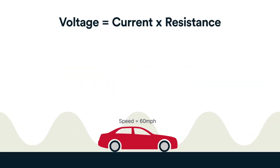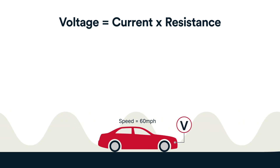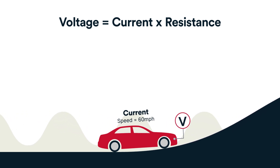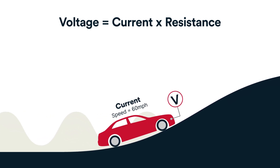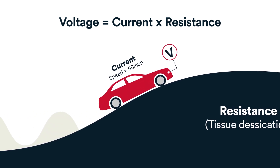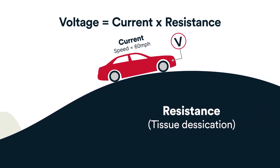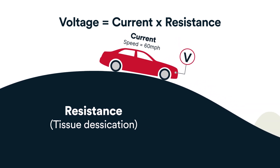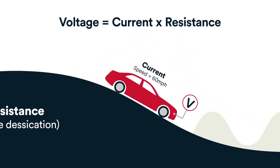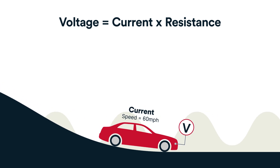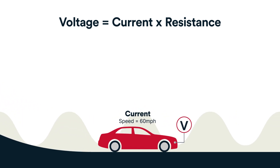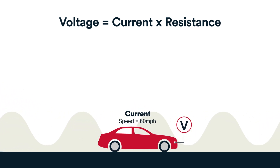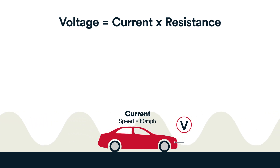To help understand this relationship, think of a car traveling at 60 miles per hour on cruise control. In this metaphor, the engine represents voltage and the desired speed of 60 miles per hour represents current. Upon encountering resistance — shown here as a hill — the engine must increase its driving force, increasing the voltage to overcome gravity to maintain the 60 miles per hour speed. Upon reaching the summit, the engine must reduce its driving force to preserve the speed, decreasing the voltage. Otherwise, the reduced gravitational resistance will cause the car to drive too fast, resulting in increased and unneeded voltage on targeted tissue.